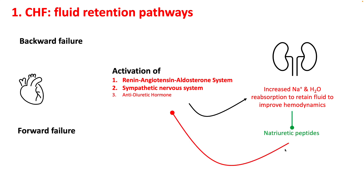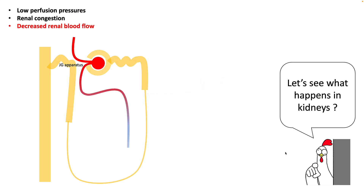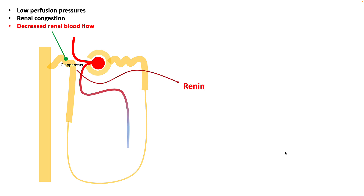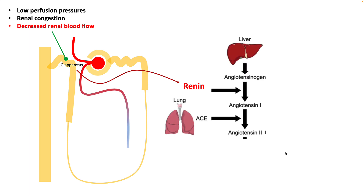However, excessive salt and water retention will stimulate your natriuretic peptide system, which will tend to oppose this excessive salt and water retention. In the kidneys, because of low perfusion pressure and renal congestion, there is decreased renal blood flow which is sensed by the juxtaglomerular apparatus, which secretes renin, stimulating your angiotensinogen to angiotensin 2 pathway.